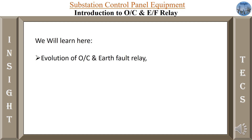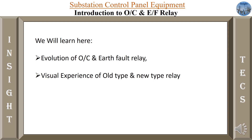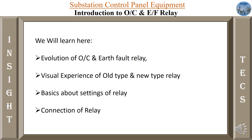We are going to cover the following topics for this video: the evolution of over current and earth fault relay — how it used to be electromagnetic and how nowadays we are using microprocessor-based numerical relays. Then a visual experience of old type and new type relay to see practically how they both differ. Then some basics about settings of the relay — why they are required and how to do them. Finally, we will understand the electrical wiring connections provided to this kind of relay.